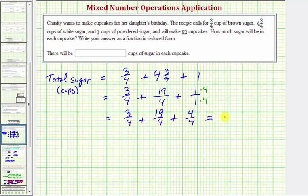Now we can find the sum. The denominator is going to stay four. The numerator is going to be three plus nineteen plus four, which is twenty-six.